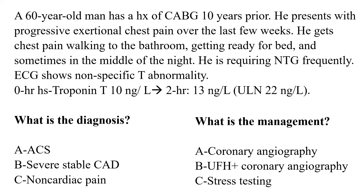Moving to a more interesting question. A 60-year-old man with a history of CABG 10 years previously presents with exertional chest pain over the last few weeks — pain walking to the bathroom, getting ready for bed, sometimes in the middle of the night. This is what you call nocturnal angina, and it's very alarming. It indicates critical disease normally. He is requiring nitroglycerin frequently. EKG shows non-specific T-wave abnormality, no ST abnormality. Initial HS troponin is 10, two-hour troponin is 13; upper limit of normal 22. What is the diagnosis and management?